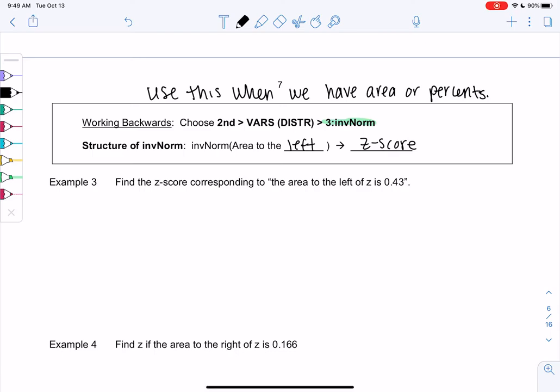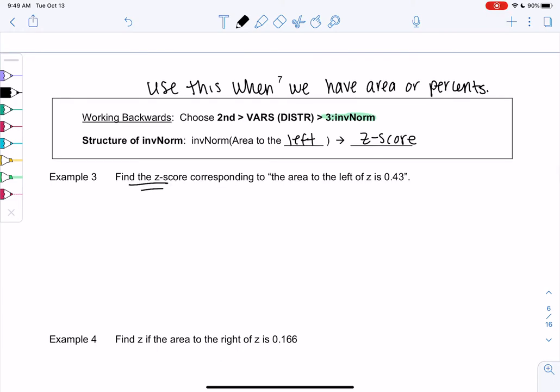So in example 3, we want to find the z-score. So we want z-score, which means we're going backwards. Corresponding to the area to the left of z, unknown, is 0.43. So this is my area, not my z-score.